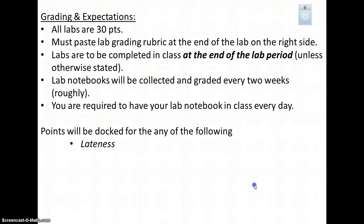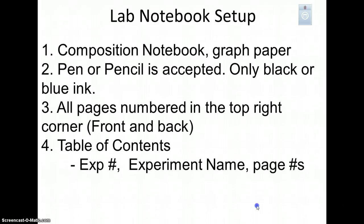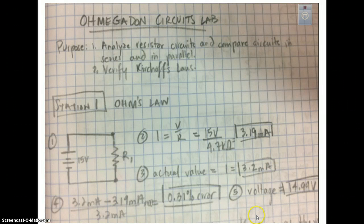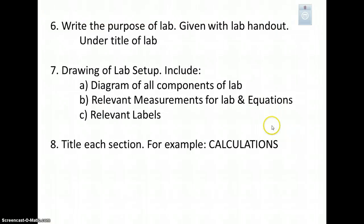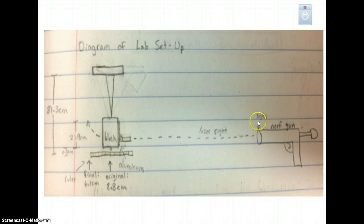If your lab is late, I will dock points. Here are all the things I've mentioned. Here's an example of a lab that's set up correctly. You can see the purpose there, how it's underlined, and this person had to show some circuit calculations. All the calculations are labeled with units, answers are boxed, all calculations are shown, and lab directions are followed. Here is an example of a diagram — you can see all the fixed measurements are made and there are arrows indicating motion. Please have that on all of your labs.